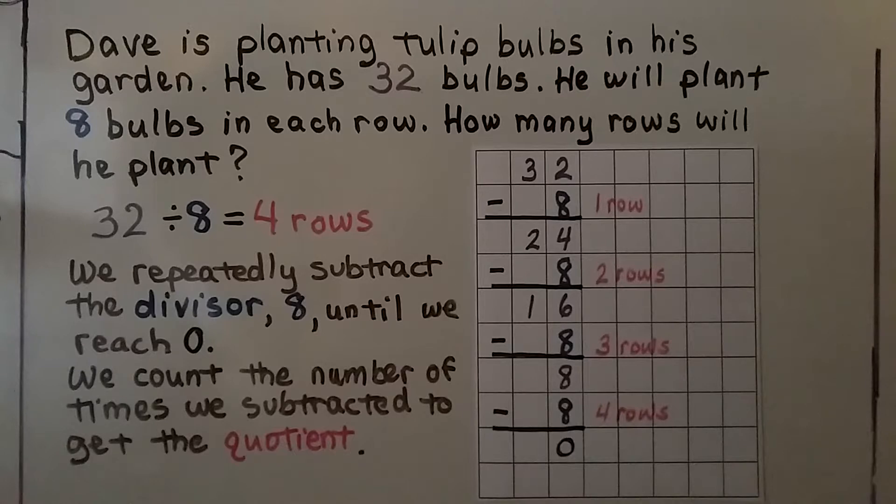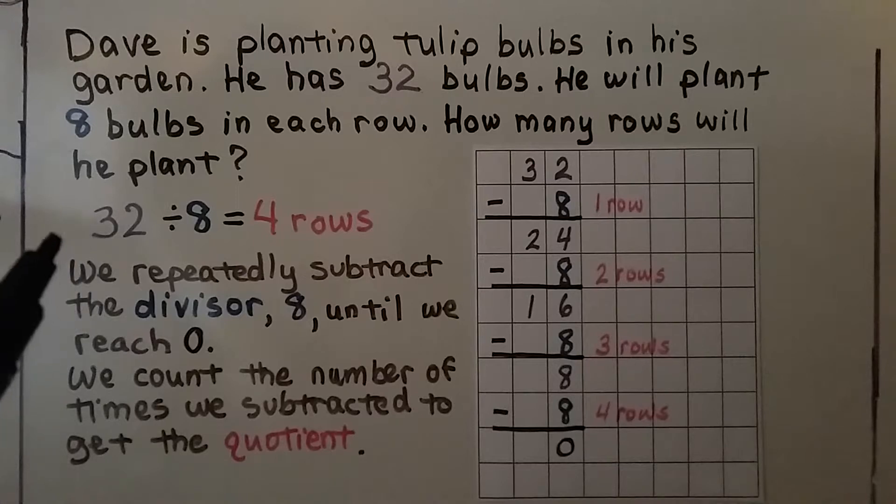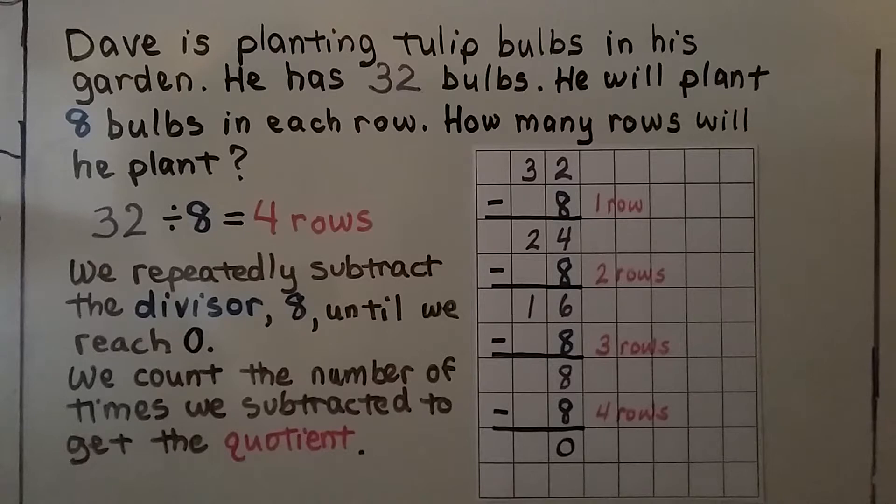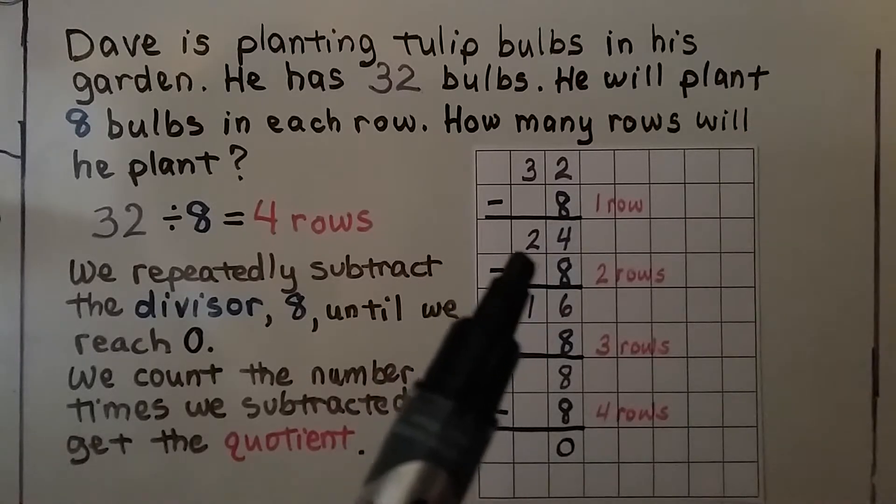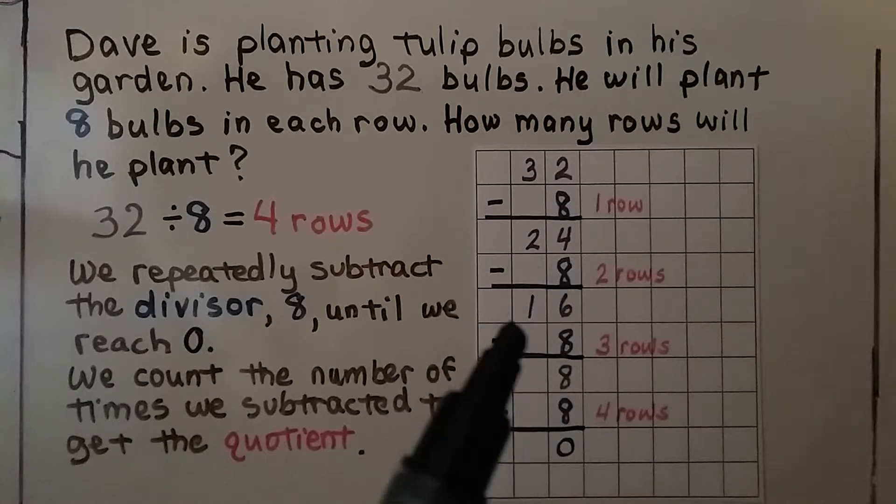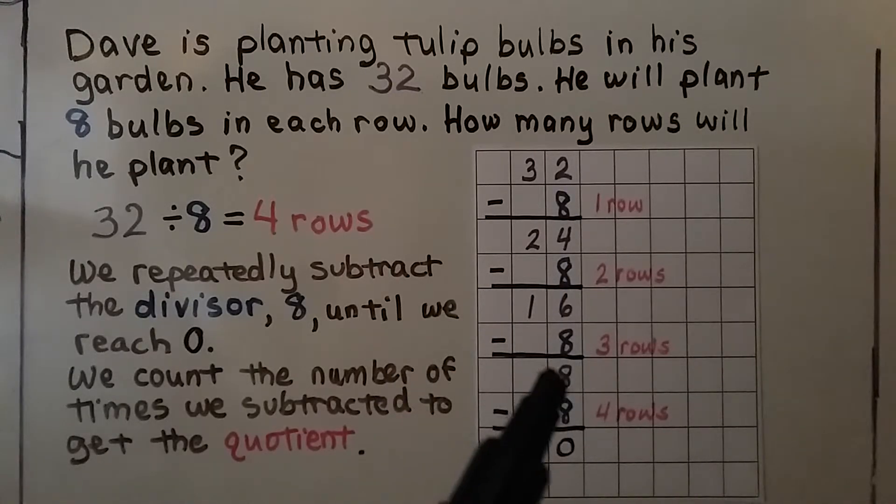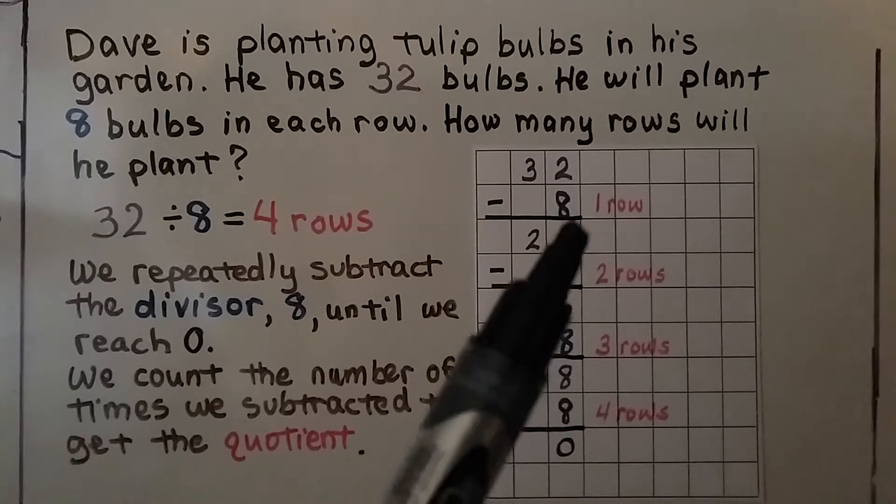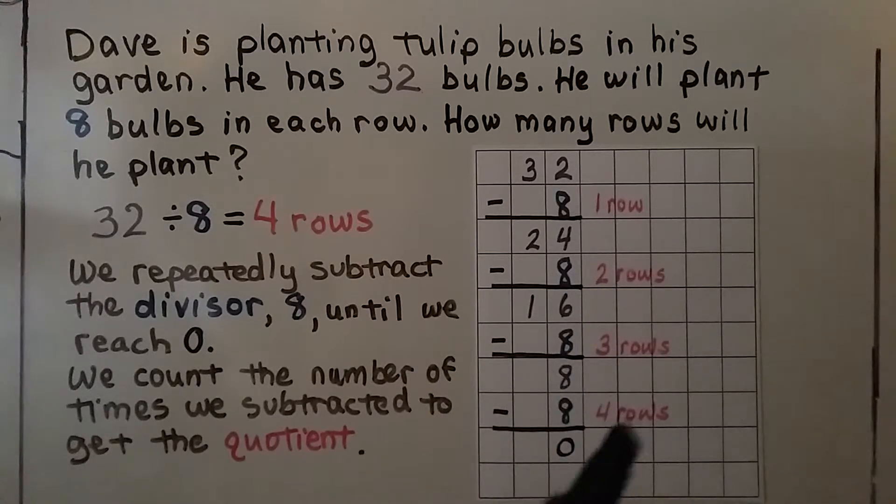Dave is planting tulip bulbs in his garden. He has 32 bulbs. He will plant 8 bulbs in each row. How many rows will he plant? We start with the dividend and repeatedly subtract the divisor, this 8, until we reach 0. 32 minus 8 is 24. 24 minus 8 is 16. 16 minus 8 is 8. And 8 minus 8 is 0. Count the number of times we subtracted to get the quotient. That's one row, two rows, three rows, four rows. So he'll make four rows.